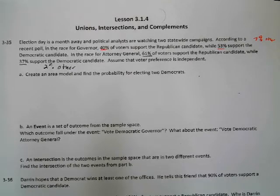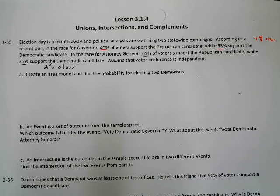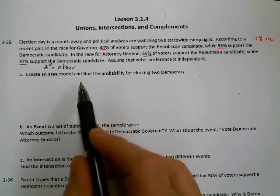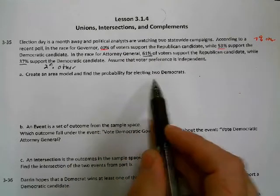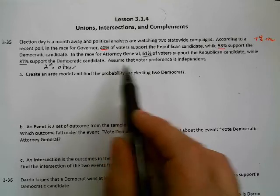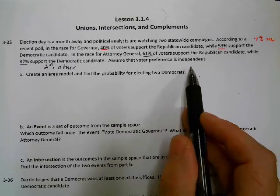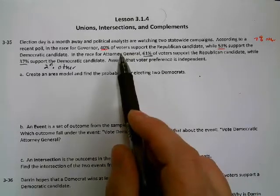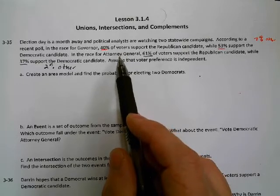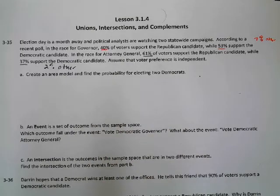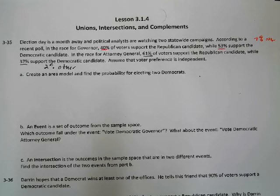Maybe it's independent, maybe it's the Green Party, something else other than the two major parties. We're supposed to create an area model and find the probability for electing two Democrats. We're going to assume that voter preference is independent — this is not very real-world-ish, because normally if you vote for a Republican governor, you're more likely to also vote for a Republican attorney general. But we're going to pretend people are voting for the person and not the party, so one vote won't affect the other.